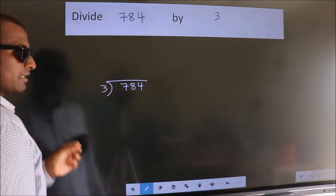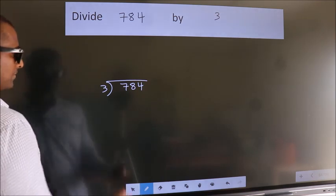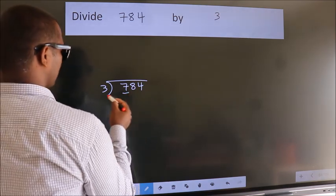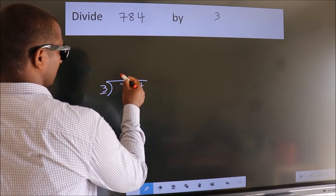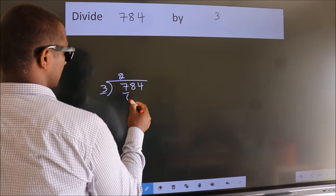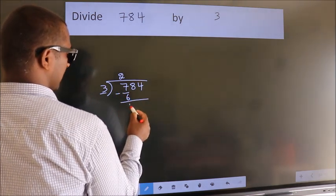This is your step 1. Next, here we have 7, here 3. A number close to 7 in 3 table is 3 2s, 6. Now we should subtract. We get 1.